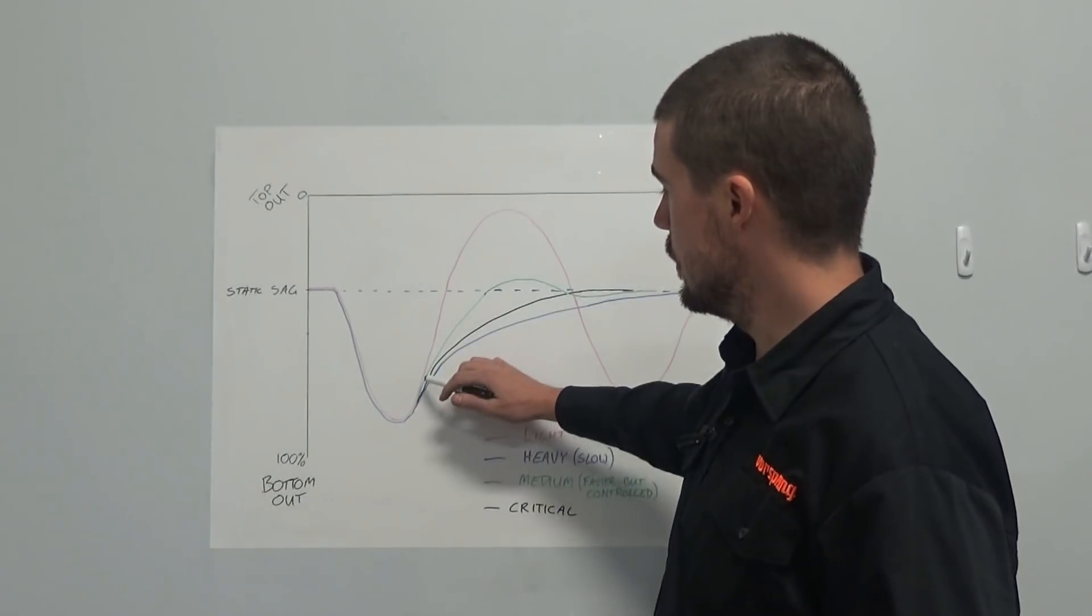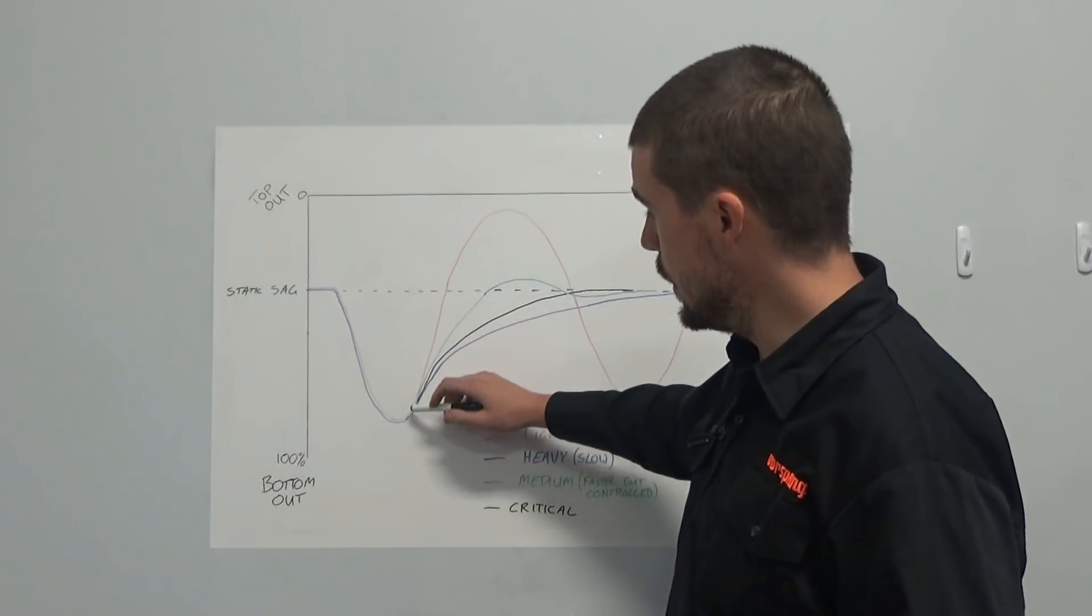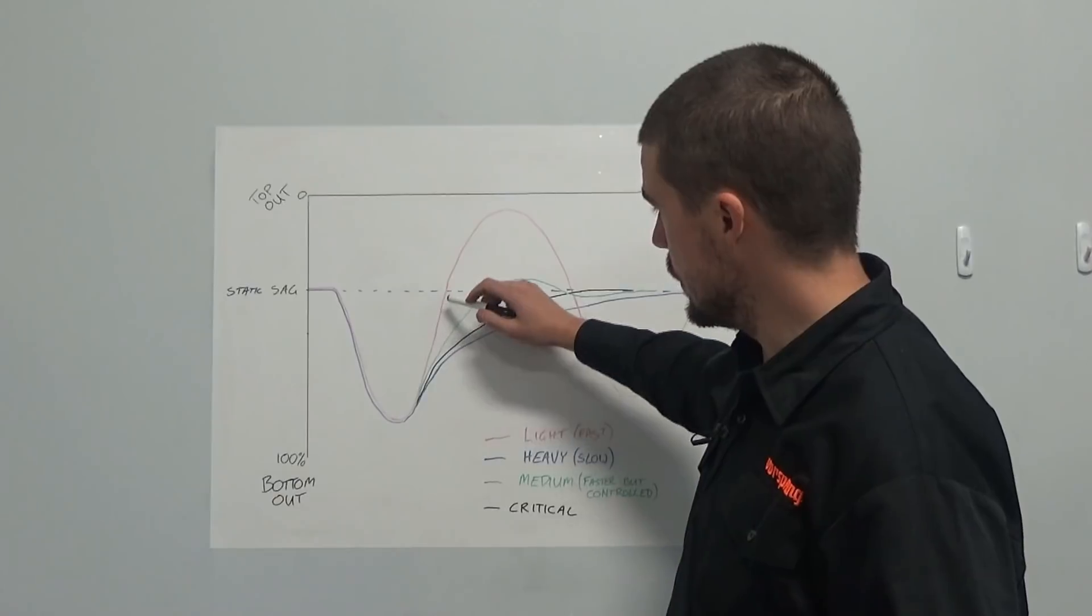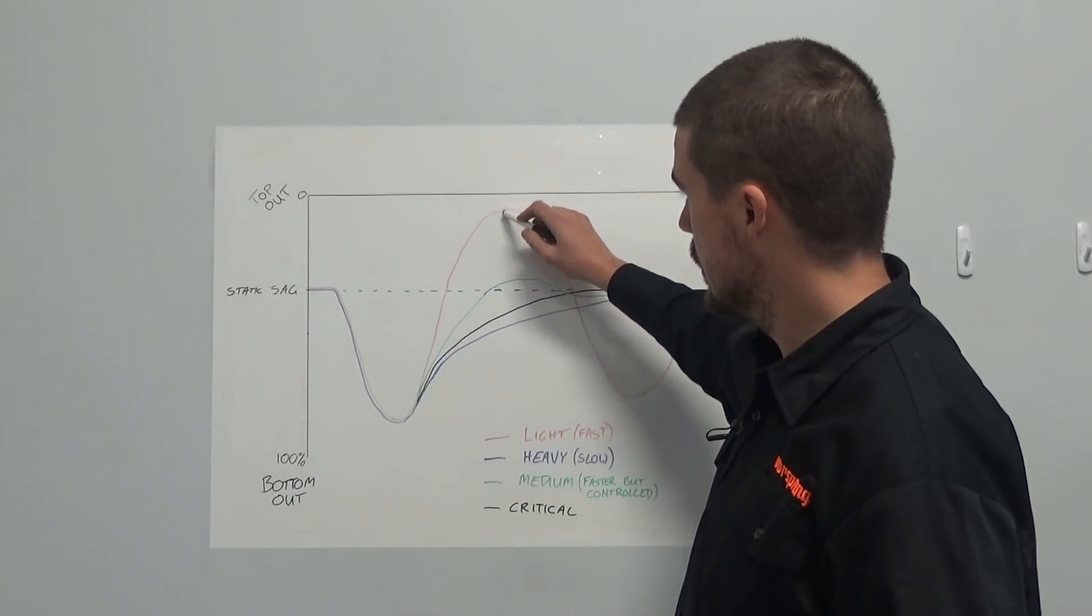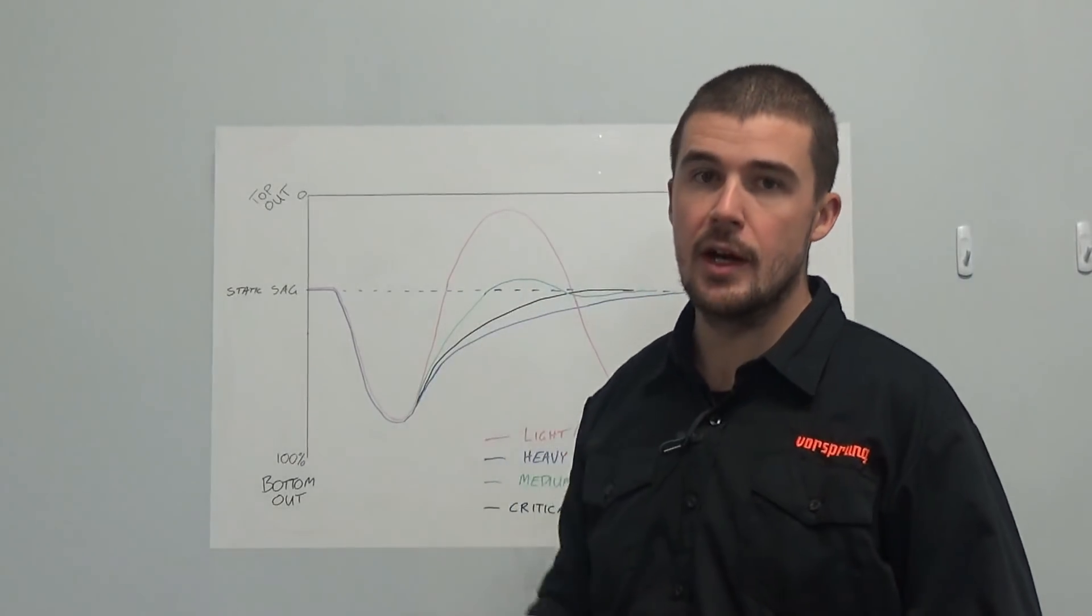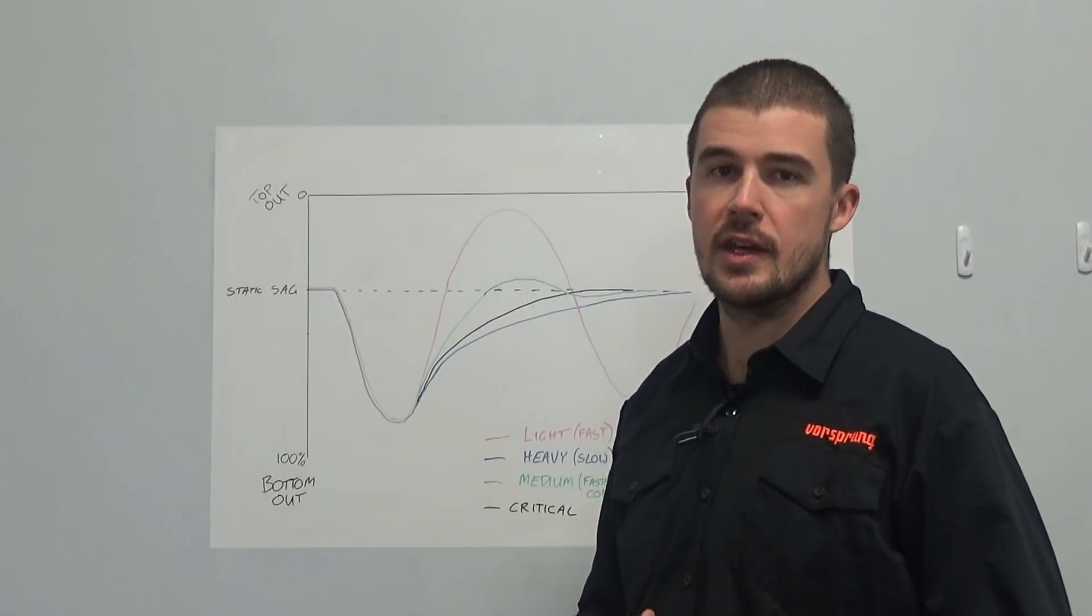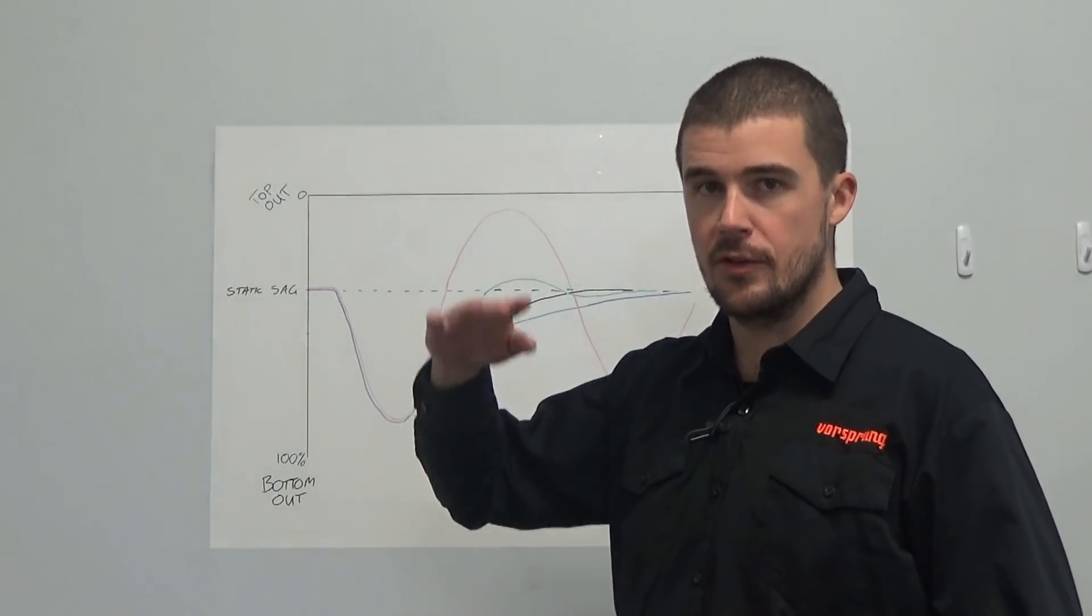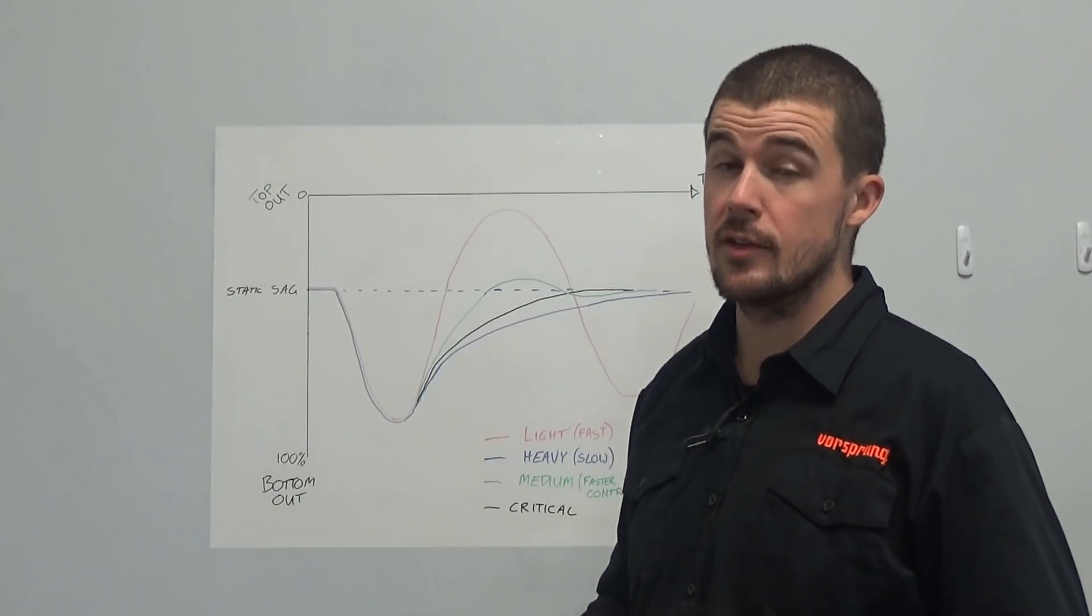So first of all, if we have very little rebound damping, far too little, we end up with something that extends quickly, gets back to the sag point, but keeps going past the sag point and then will eventually turn around and so forth. It will oscillate up and down. Now, completely undamped movement with no friction or anything in theory would continue to oscillate basically forever. What we really want to do is stabilize things a bit more than that.